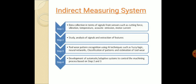Next comes the indirect measuring system. In this we have four steps. The first step is the data collection. The data collection may be in the term of the signals from the sensors such as the cutting force or the vibrations. Then after this it passes to step two where the analysis of signals are done, then the extraction of feature is done to pass on to step three.